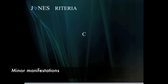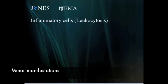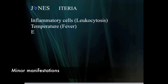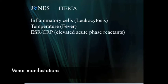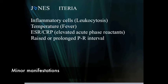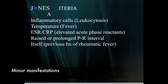Now, for the minor criteria, we use the word 'criteria' but we throw out the C and the R. We begin with the letter I, which stands for inflammatory cells or leukocytosis — sometimes this is left out of the minor criteria. The T is for temperature — fever. E is ESR and CRP, the acute phase reactants. The R is for a raised or prolonged PR interval. And then the final I stands for any previous history of rheumatic fever, which is a minor criteria.